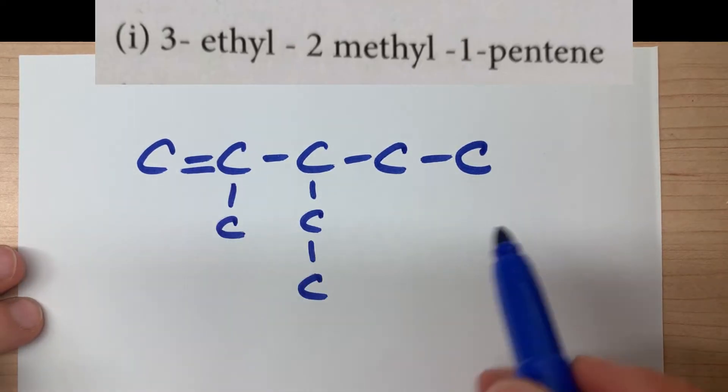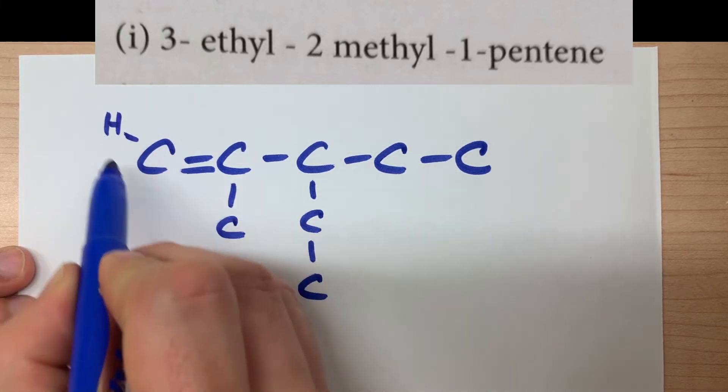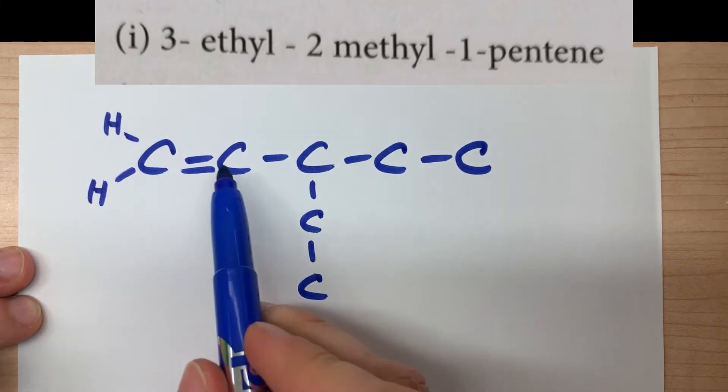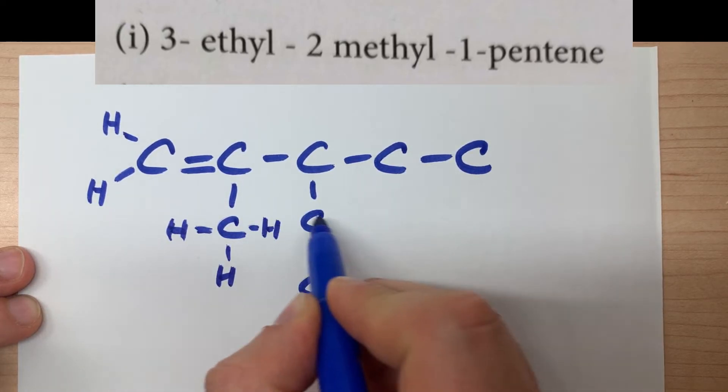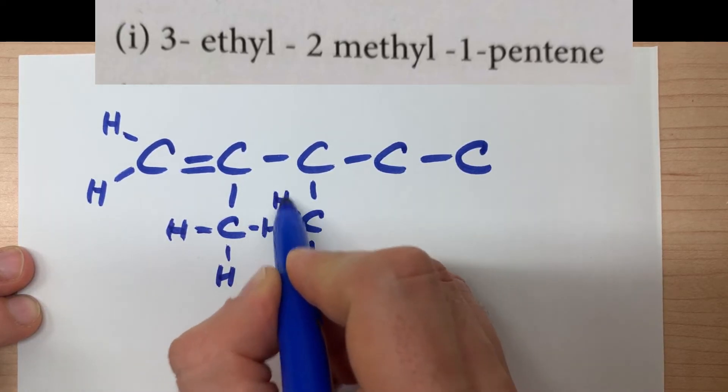Now you're probably supposed to fill out the hydrogens. Each carbon needs four bonds total. And so if there aren't already four bonds to each carbon, it's going to be your job to add those hydrogens in.